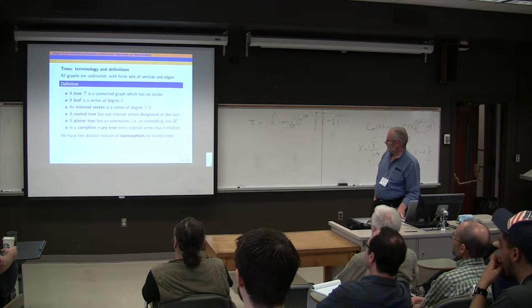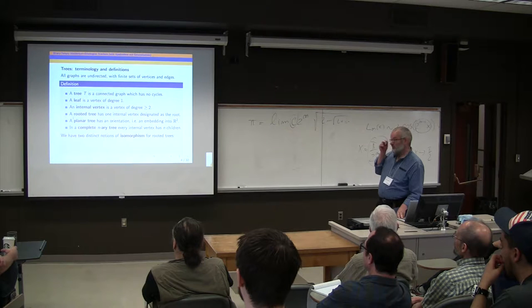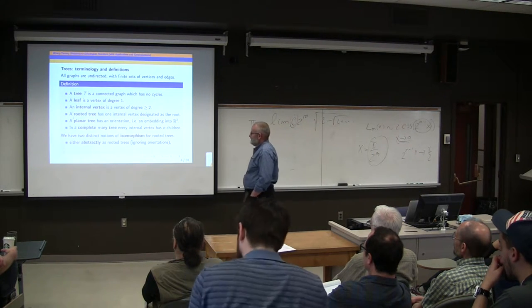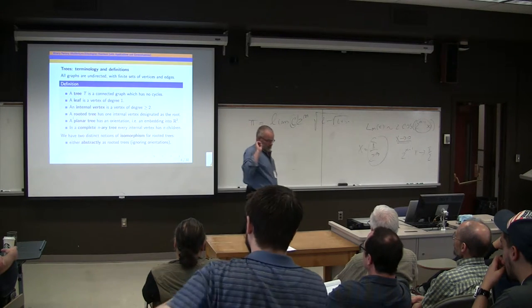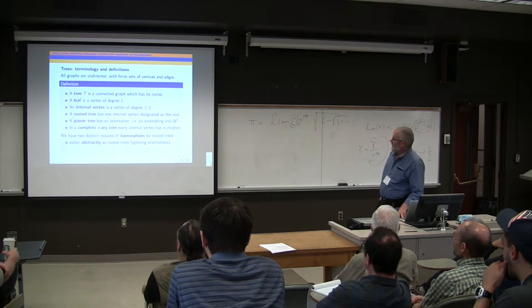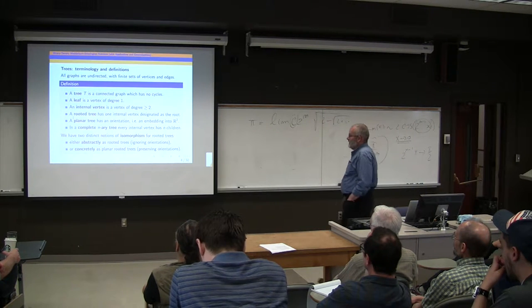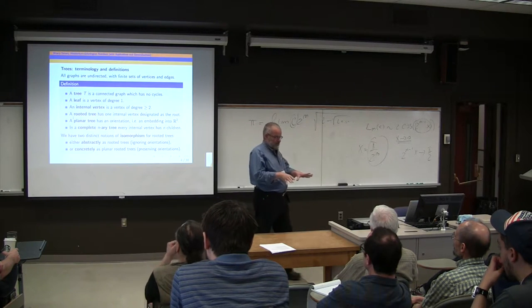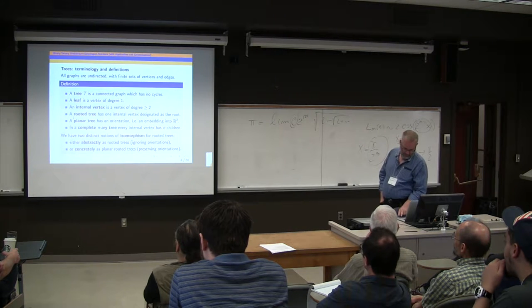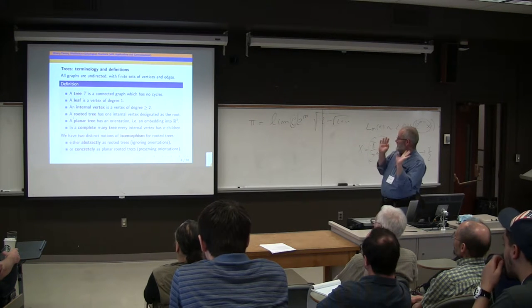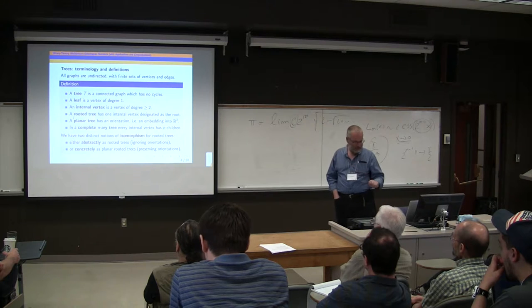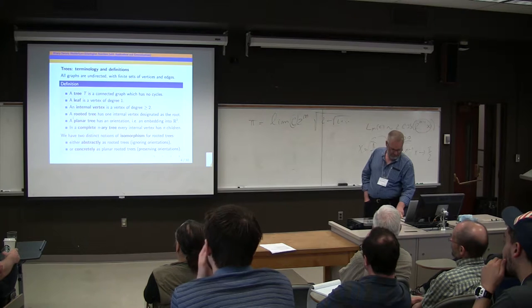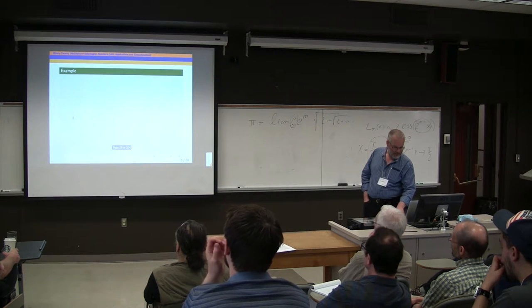Now there are two different notions of isomorphism for rooted trees, basically depending on whether we label the leaves or not. We can think of them abstractly as rooted trees, that's ignoring the orientation or not putting labels on the leaves. Or we can have what I call a concrete isomorphism as planar rooted trees preserving the orientation, the embedding into the plane, or equivalently the order on the leaves from left to right. So I'm going to call these abstract and concrete isomorphism, which is perhaps non-standard terminology, but I find it helps me avoid getting confused.